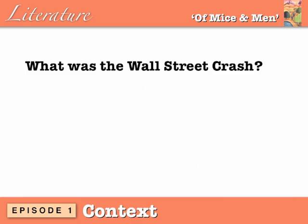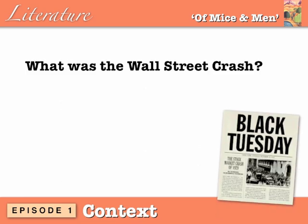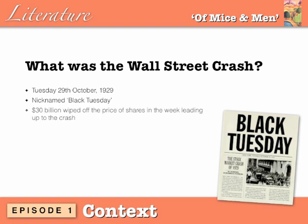So what was the Wall Street Crash? It was a stock market crisis which occurred on Tuesday 29th October 1929, later nicknamed Black Tuesday. $30 billion was wiped off the price of shares as the stock market began to slide in the week leading up to the crash, and $14 billion was lost on the day itself.